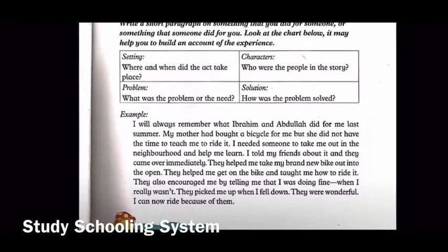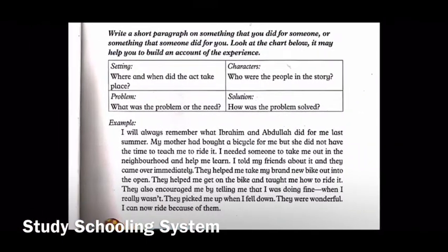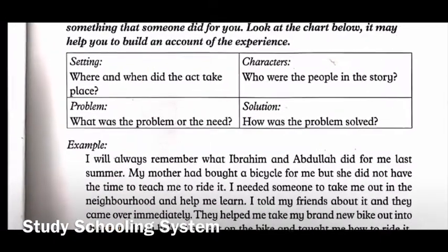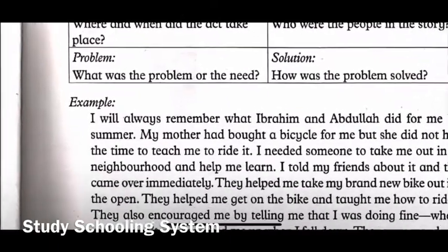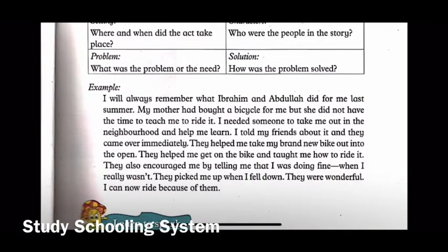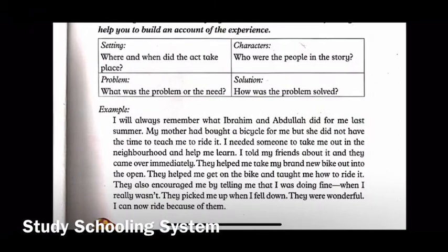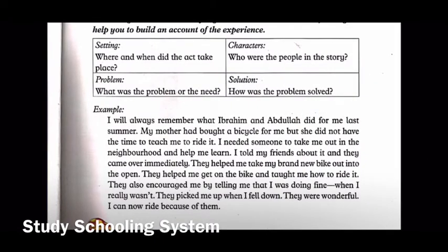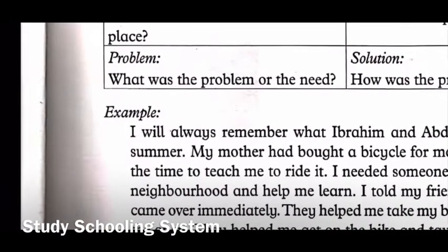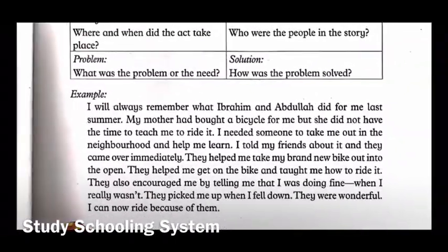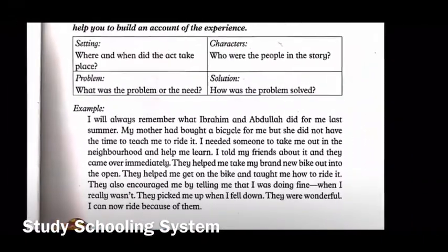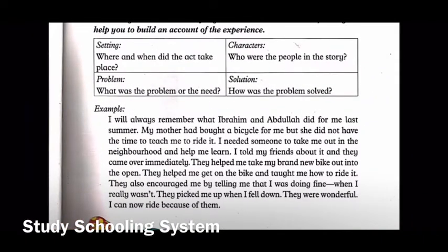Now let's dissect this example paragraph. What is the setting? For when, they have written last summer, and for place, out in the neighborhood — so the setting has been answered. For characters, who are the people in the story? The first person is I — the person writing the story. Then we have Ibrahim and Abdullah who helped him, and the mother who gifted the bicycle. The main people are Ibrahim and Abdullah, who the story is about.